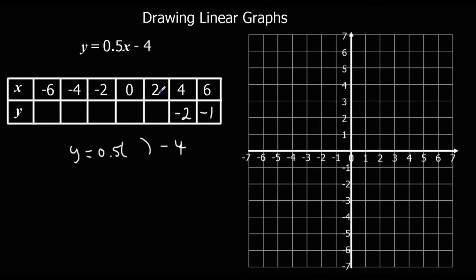Half of 2 is 1. Take away 4 minus 3. Half of nothing is nothing. And we can see the pattern here. It's going down by 1 each time. So we could carry on with the pattern. Or we could have carried on substituting numbers in.